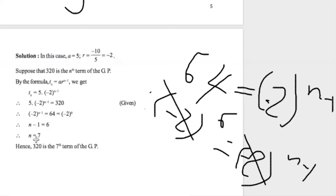And then carry it over. So you have N equals 6 plus 1 to give you 7. So it means that 320 is the 7th term.